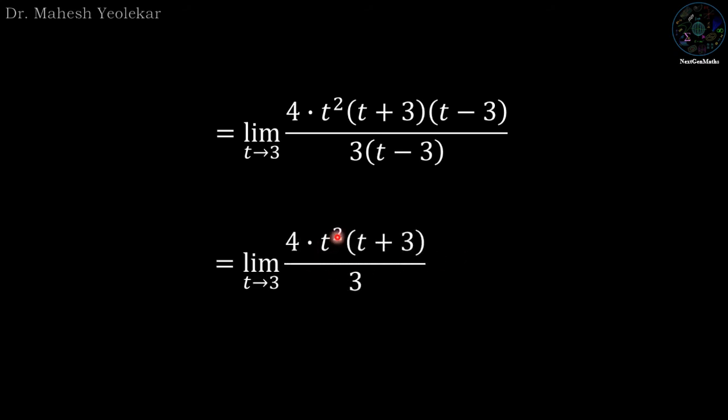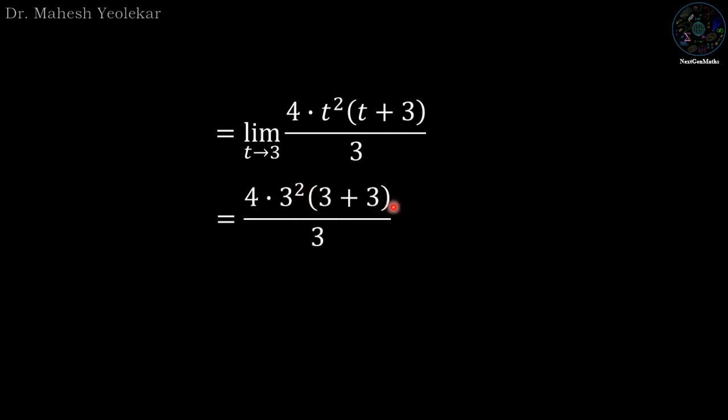Now substitute the value of t equal to 3: we have 4·3² times (3+3) divided by 3. So the 3s cancel and we have 4·3·6 which is 72.